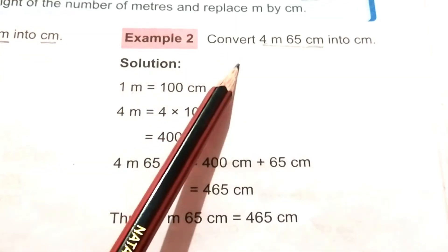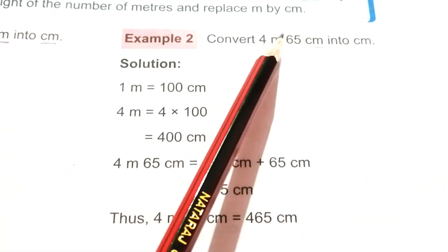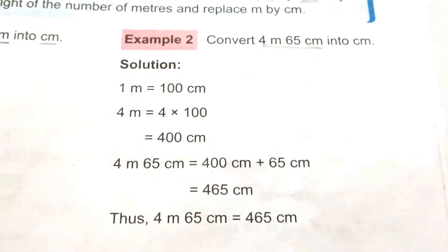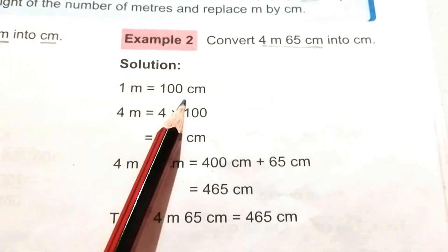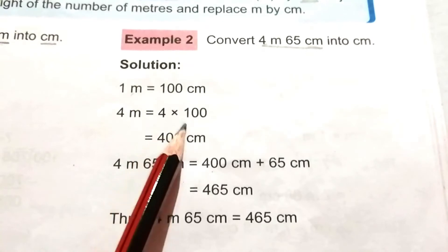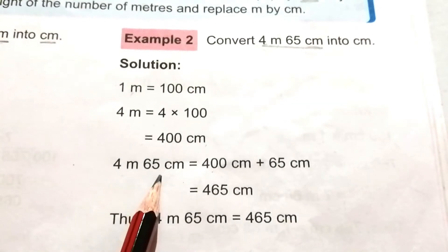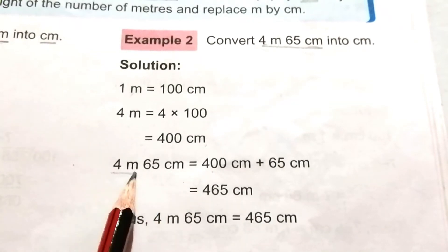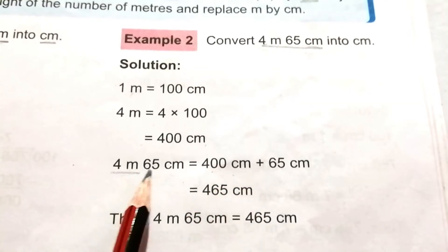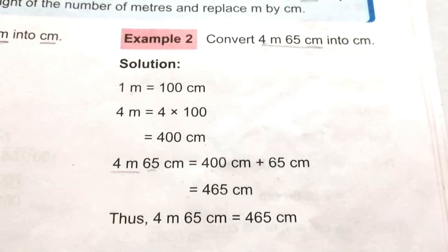Example 2: Convert 4 meters 65 centimeters into centimeters. First, convert the meters into centimeters. We know 1 meter equals 100 centimeters, therefore 4 meters equals 4 × 100 = 400 centimeters. So 4 meters 65 centimeters equals 400 centimeters plus 65 centimeters, which equals 465 centimeters.